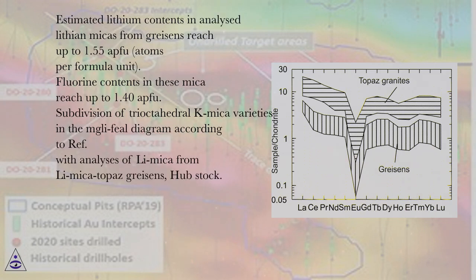Estimated lithium contents in analyzed lithium micas from greisens reach up to 1.55 APFU, atoms per formula unit. Fluorine contents in these mica reach up to 1.40 APFU.